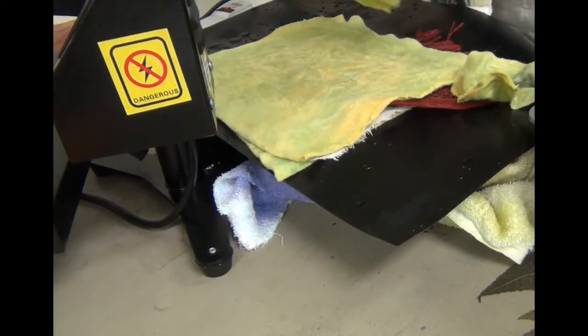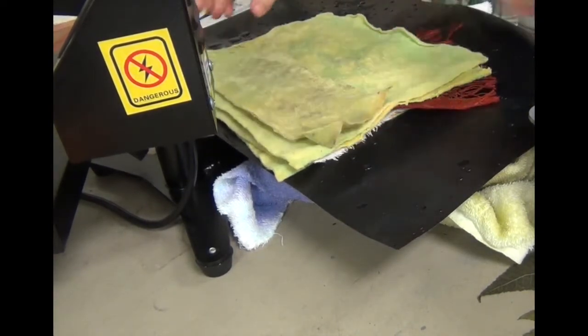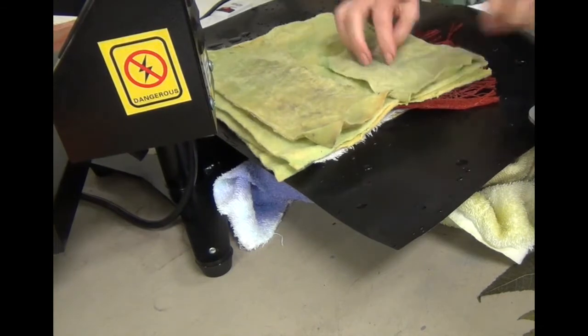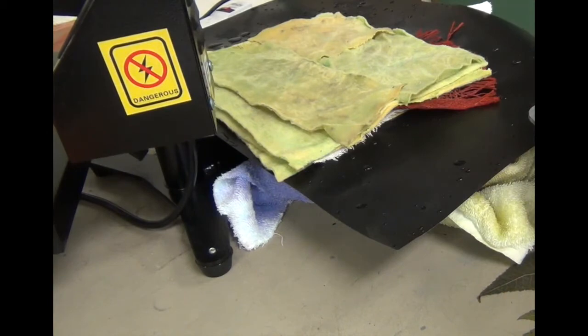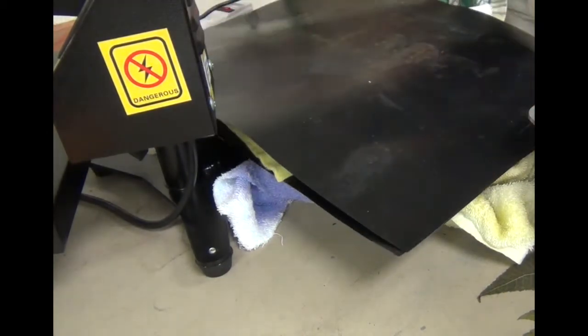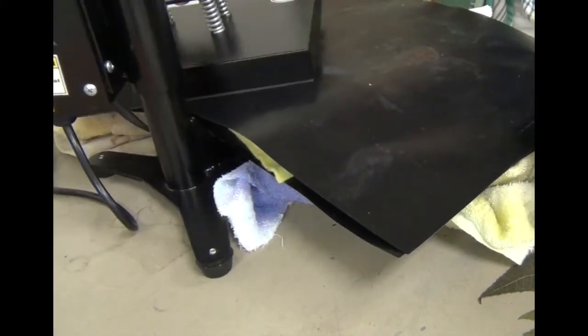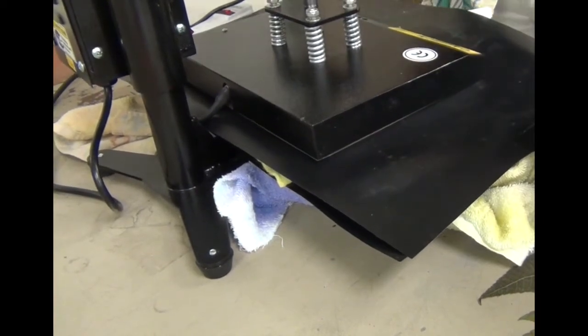We're going to go ahead and add our fleece that's been soaked in water and kind of scrunched out. And we're going to always remember to put that Teflon sheet on the top. I use one on the bottom and on the top and I have some towels around the side to try to pick up the overflow.